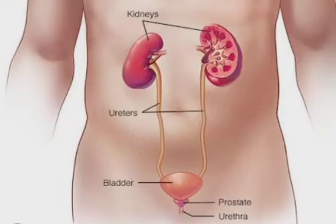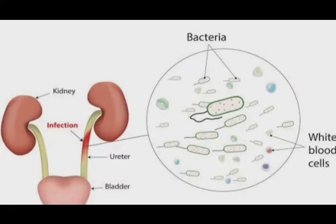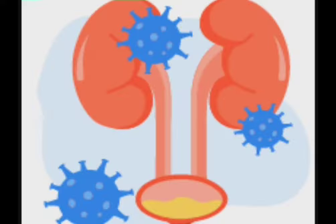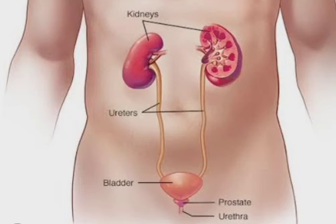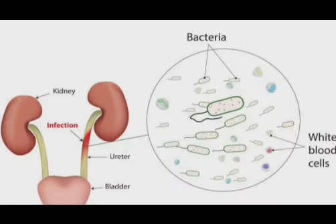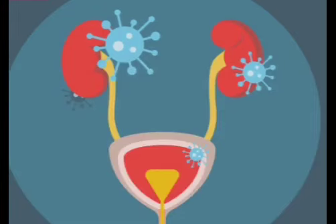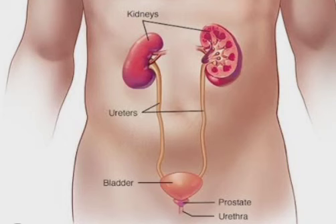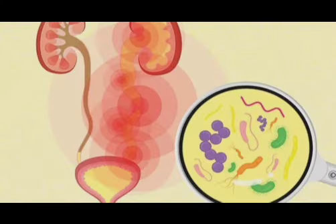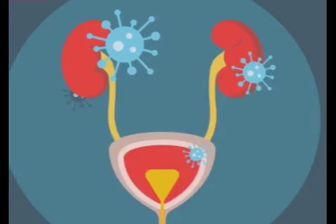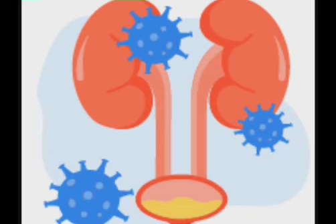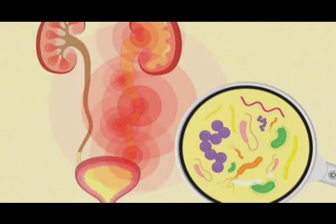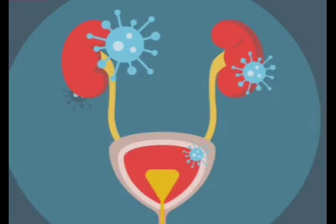UTIs may be treated with antibiotics but they are not always needed. Urinary tract infections are usually caused by bacteria from poop entering the urinary tract. The bacteria enter through the tube that carries pee out of the body, the urethra. Women have a shorter urethra than men, which means bacteria are more likely to reach the bladder or kidneys and cause an infection.